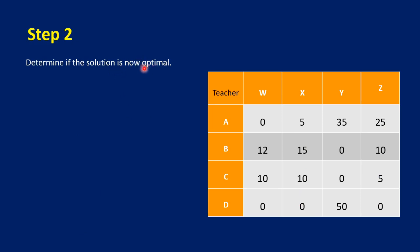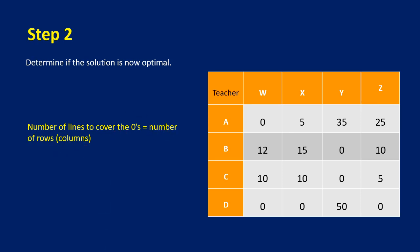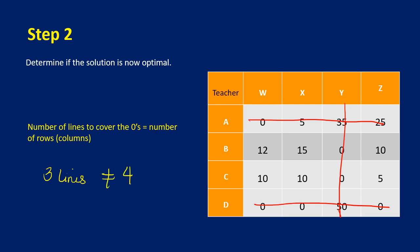Next we determine if the solution is now optimal. Recall that the minimum number of lines needed to cover all zeros must equal the number of rows or columns. Covering the zeros here, we can cover three zeros with one line, then two more zeros with another line, then one more — giving us three lines total. Since three is not equal to four rows, this is not yet optimal.